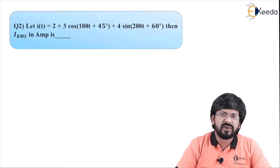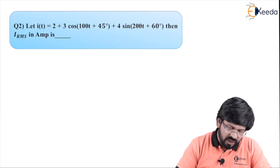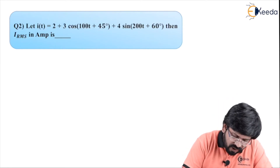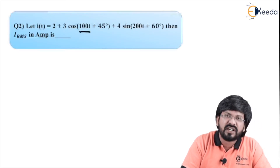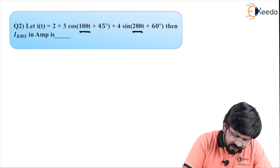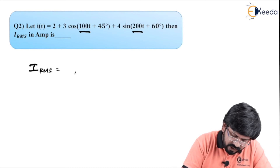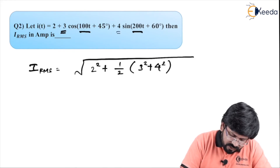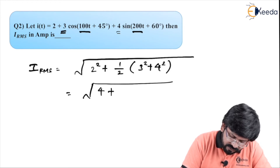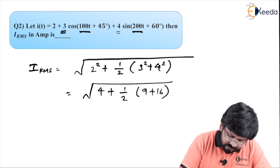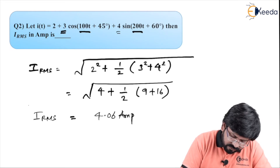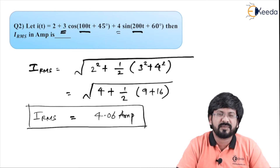We can move to the next problem. Question number 2: I(t) equals 2 plus 3 cos(100t + 45°) plus 4 sin(200t + 60°). This is not an issue because even though there are cos and sin terms, they do not share the same frequency. So we directly apply the formula: I_RMS equals under root of 2 squared plus half times (3 squared plus 4 squared), which is 4 plus half of (9 plus 16), giving 4.06 ampere.